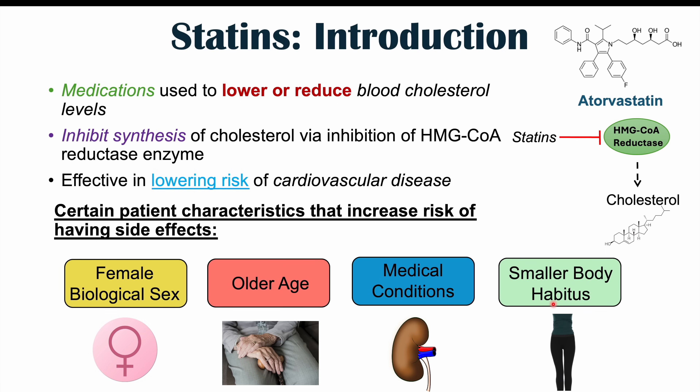If you were to give the same dose to someone smaller compared to someone larger, the smaller person will be exposed to a higher concentration of the dose. So some of these patient characteristics will play a role in the health consequences we'll discuss. The first health consequence we're going to discuss is rhabdomyolysis.